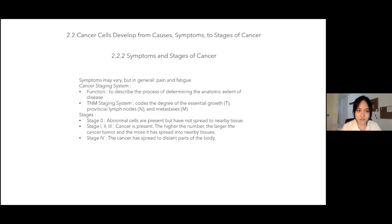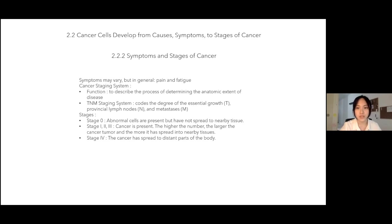There are five stages of cancer. Stage 0 means abnormal cells are present but have not spread to nearby tissue. For stages 1, 2, and 3, the cancer is present; the higher the number, the larger the tumor and the more it has spread into nearby tissues. Stage 4 means the cancer has spread into distant parts of the body.